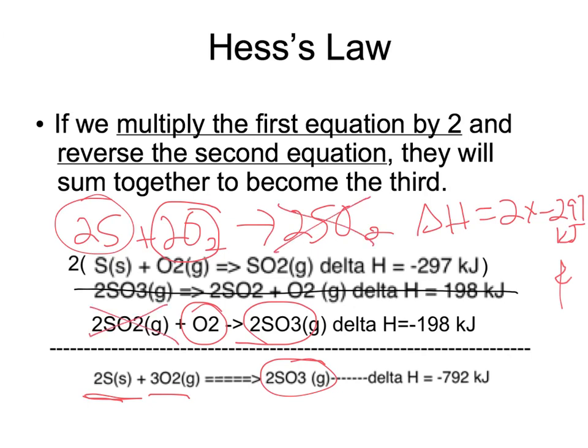So now the final step is, I have to take two times negative 297 plus negative 198. And when I do that, I should get delta H is negative 792 kilojoules. This is Hess's law.